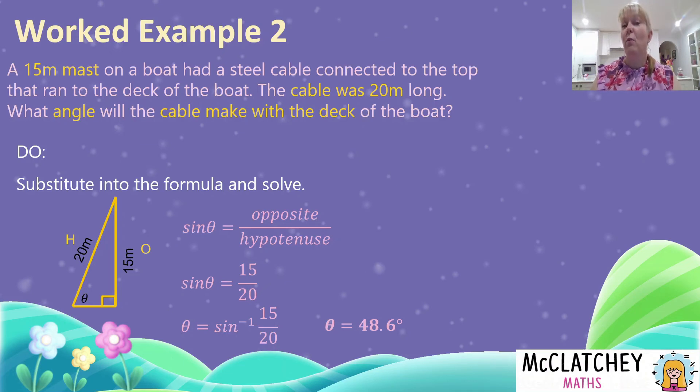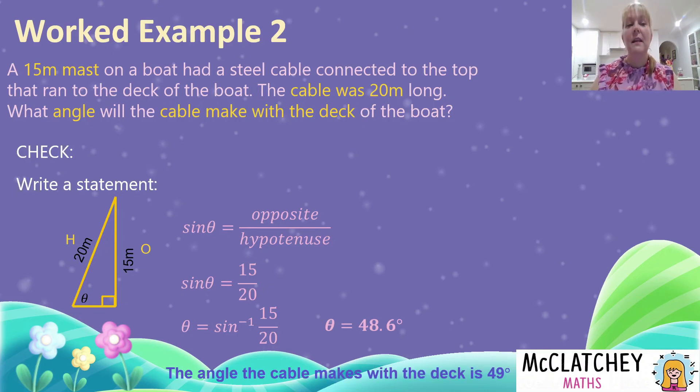Now you might also want to consider rounding that to the nearest degree, which would be 49 degrees. Now we haven't finished. We need to write a statement. That's part of our check process. So I'm going to write a statement. The angle the cable makes with the deck is 49 degrees. But checking your answer, a few other things is quite important to make sure you've done the right thing.